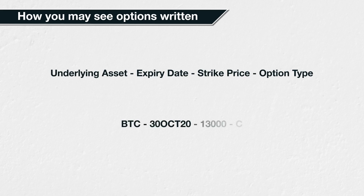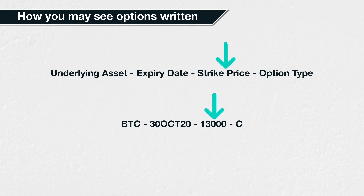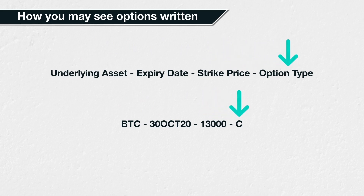For example, if you see an option written as BTC-30OCT20-13000-C, this means the underlying asset is Bitcoin (BTC), the expiry date is the 30th of October 2020, the strike price is $13,000, and the option type is call. The buyer of this call option is purchasing the right to buy Bitcoin at a price of $13,000 on the 30th of October 2020.